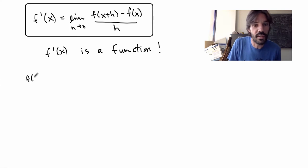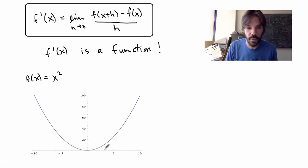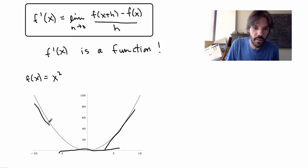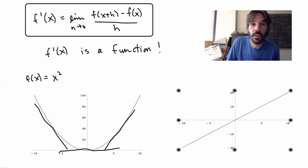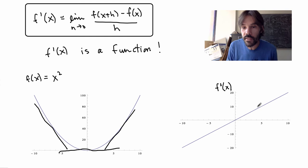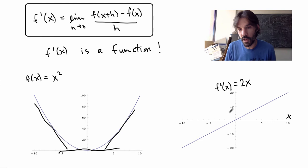Let's see how that goes in our previous example where f(x) is the square function. I can look at the derivative at arbitrary points — here I get the slope of one tangent line, here another, and so on. If I put all these slopes together I get a new function. In this case it turns out that f prime of x is just the function 2x. This makes sense: at x equals 0 the derivative is 0, which is correct because the slope of the tangent line is 0. For positive x the slope is positive, and for negative x the slope is negative.